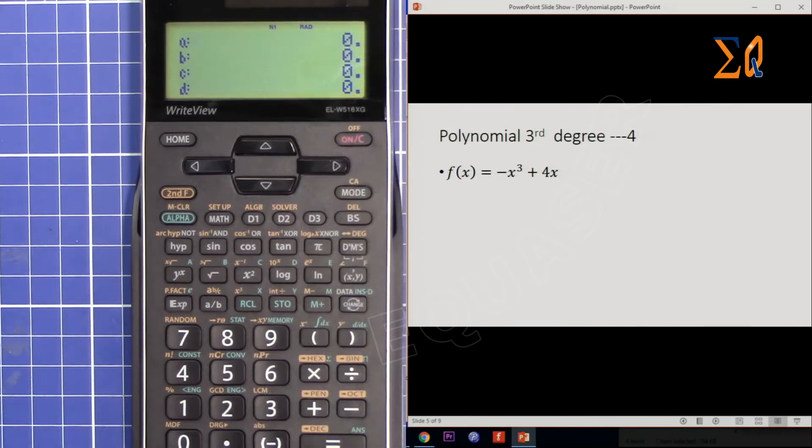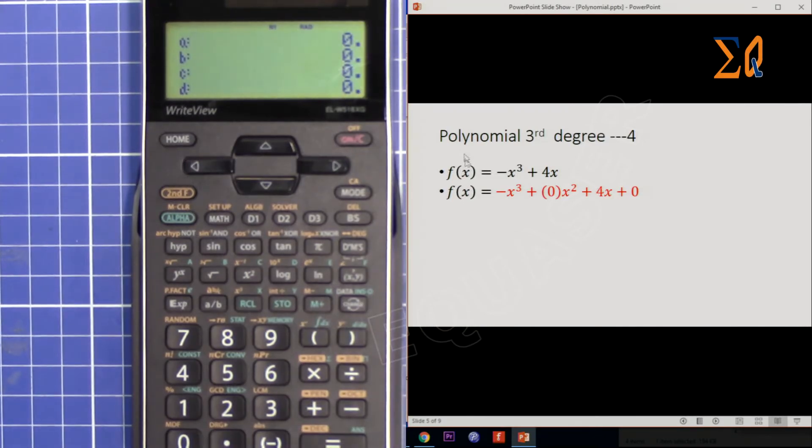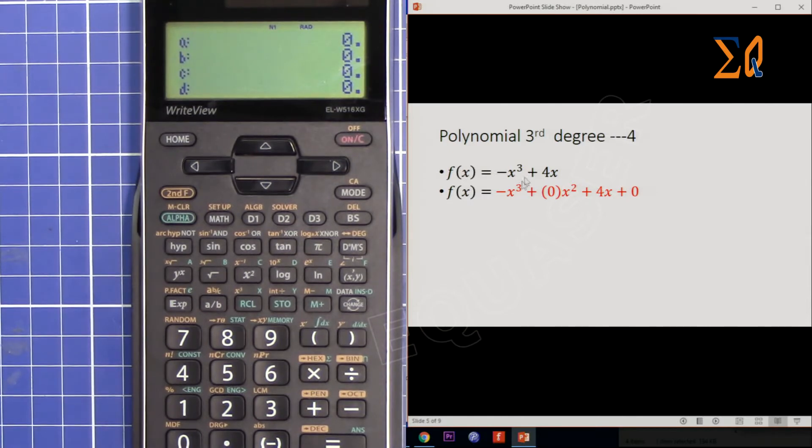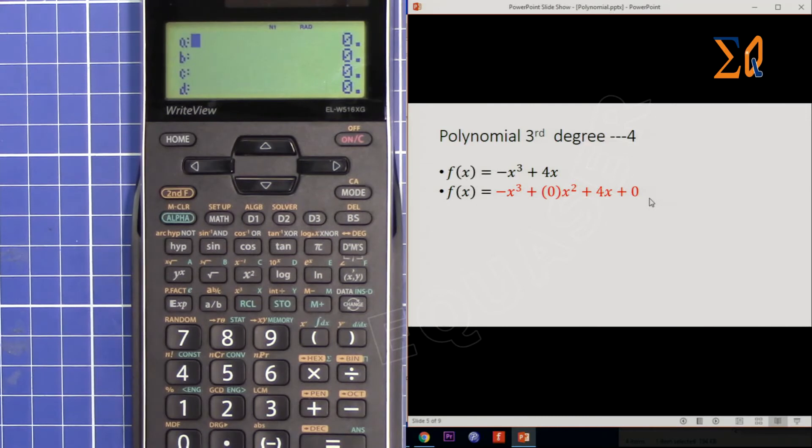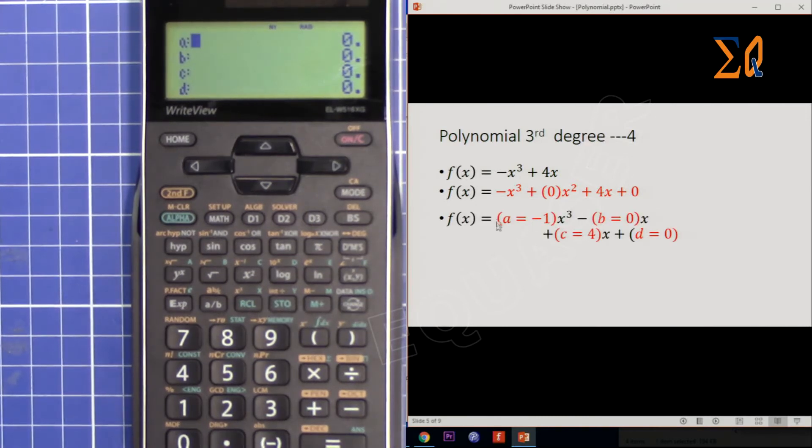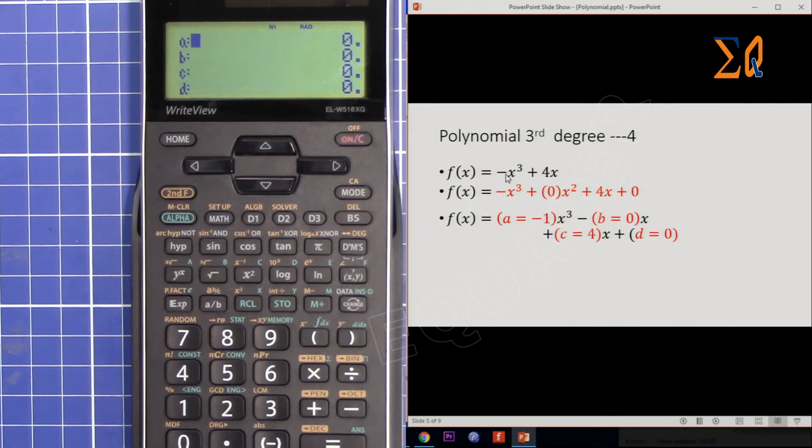Now we have a, b, c, and d. In this case we have this equation. Because we don't have x to the power 2, we have 0x² + 4x, and then the last value doesn't exist. Remember we have another term, so we should have four terms here. The values are: a is the coefficient of x³ which is -1, b is 0 (doesn't exist), c is 4, and d is 0.